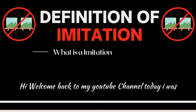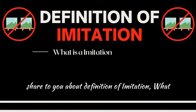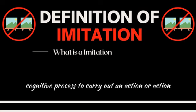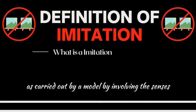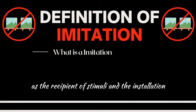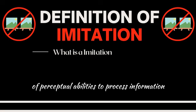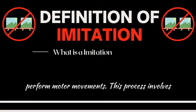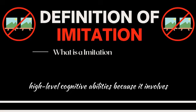Welcome back to my YouTube channel. Today I will share with you the definition of imitation. Imitation is a cognitive process to carry out an action as carried out by a model, involving the senses as the recipient of stimuli and the application of perceptual abilities to process information from those stimuli, with the ability to perform motor movements.